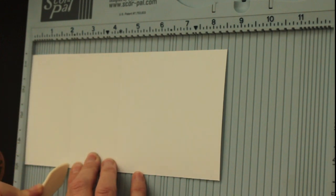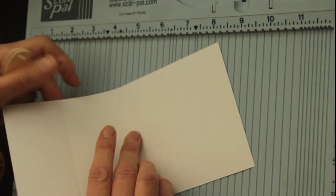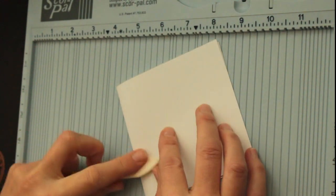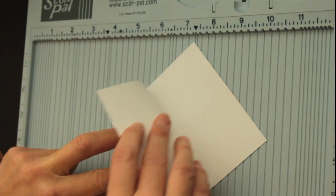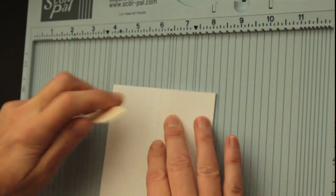For scoring, I'm using the new ScorePal, but you can use any score tool. Then you fold your card base in half and then fold your quarter piece back.